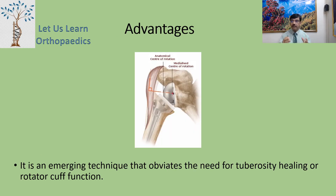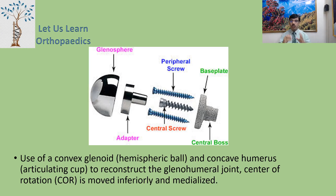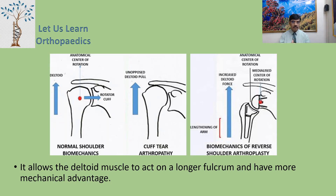The advantages of reverse shoulder arthroplasty over normal anatomical shoulder arthroplasty: it is an emerging technique that obviates the need for tuberosity healing or rotator cuff function, which is its biggest advantage. It uses a convex glenoid hemispherical ball and a concave humeral articulating surface to reconstruct the glenohumeral joint. The center of rotation is moved inferiorly and medialized, allowing the deltoid muscle to act on a longer fulcrum with greater mechanical advantage.